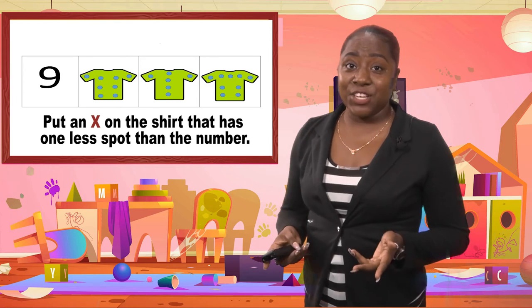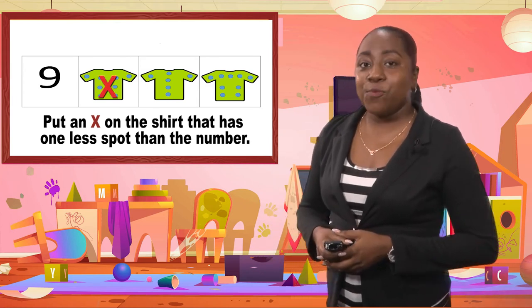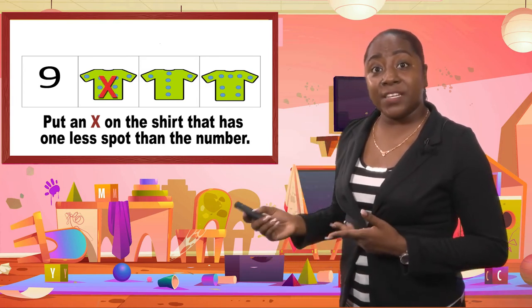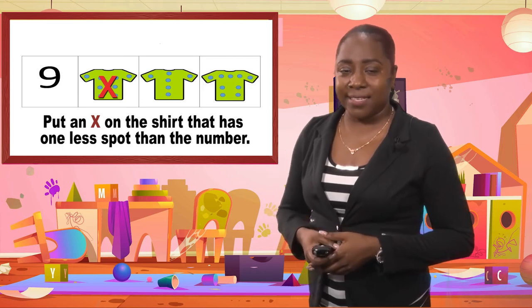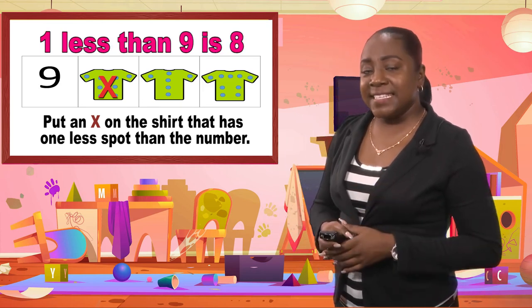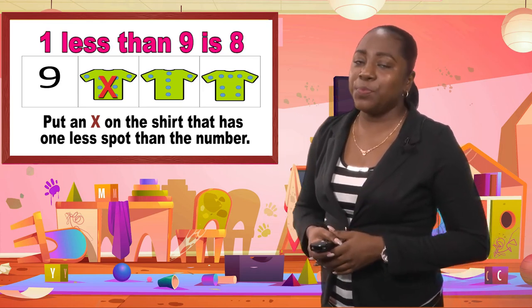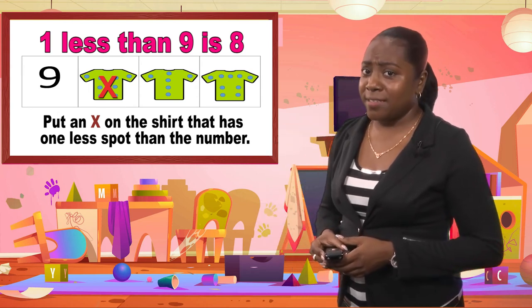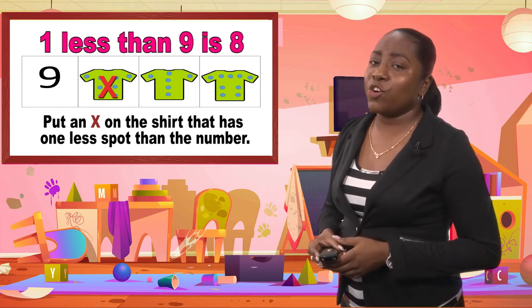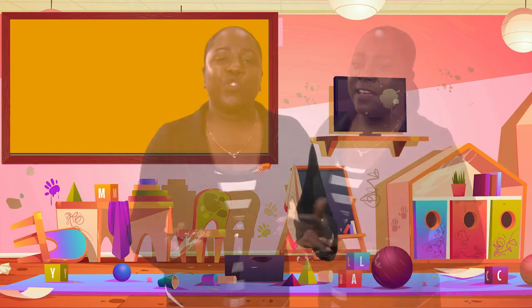Found the answer? So the answer would be the first t-shirt that has eight spots. One less than nine would be the number eight. I hope you had that correct. If you did, great job. Great job on identifying all the pictures or objects that had one less.